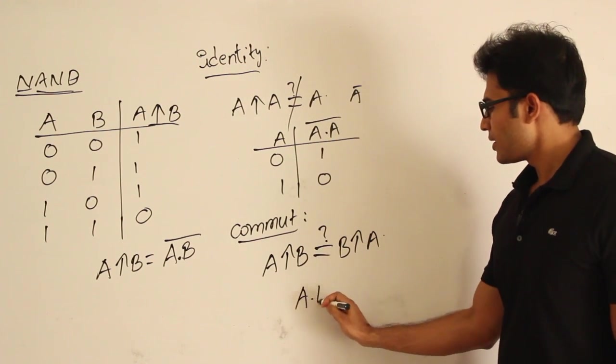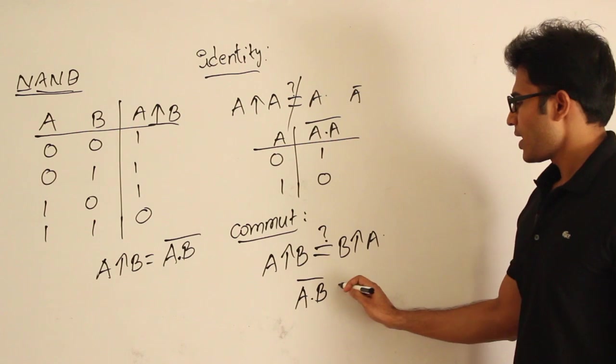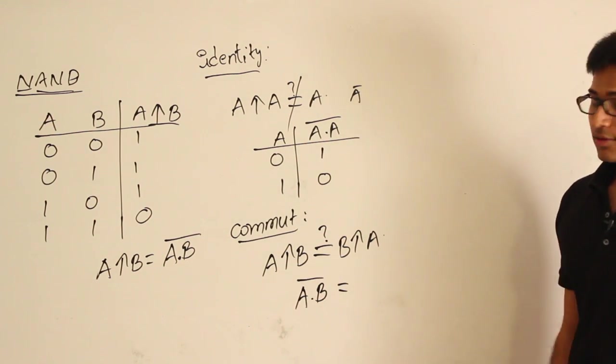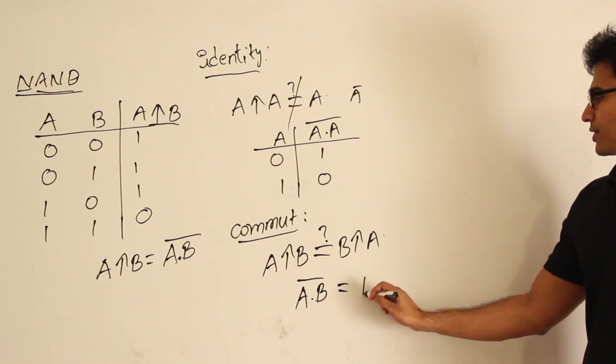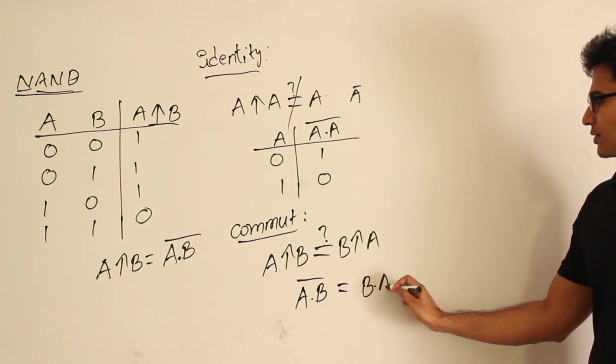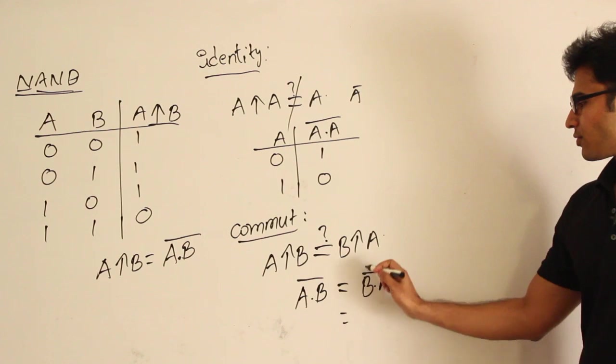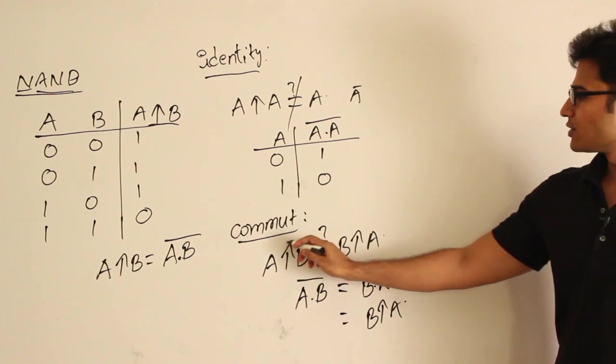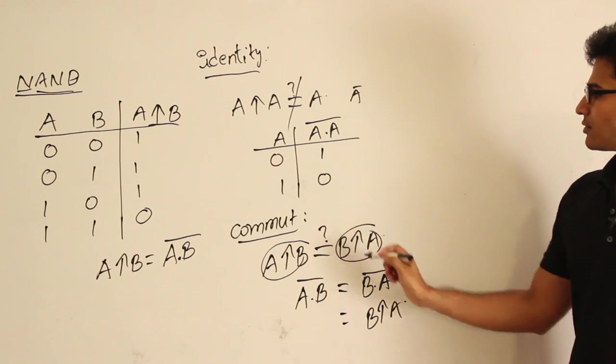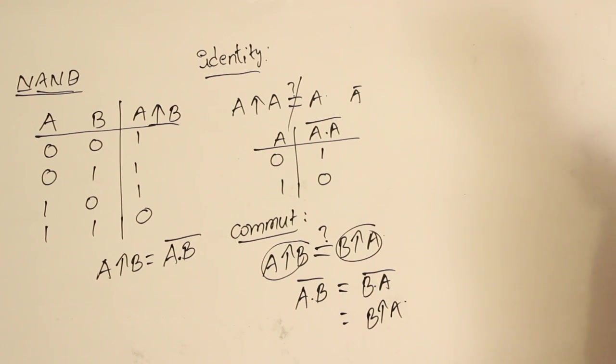How can you write A NAND B? A and B, NOT. Now you know that this AND is commutative. Since AND is commutative, you can say that it is equal to this. Therefore you could say that it is nothing but B NAND A. So these two are actually equal. Therefore it is commutative.